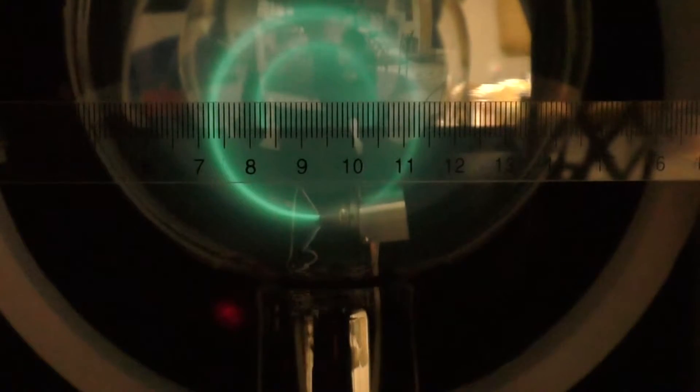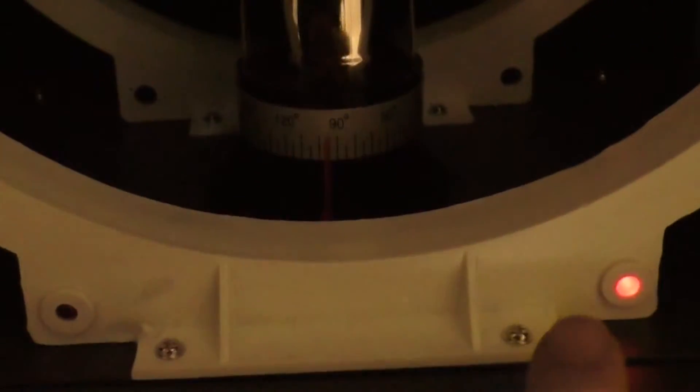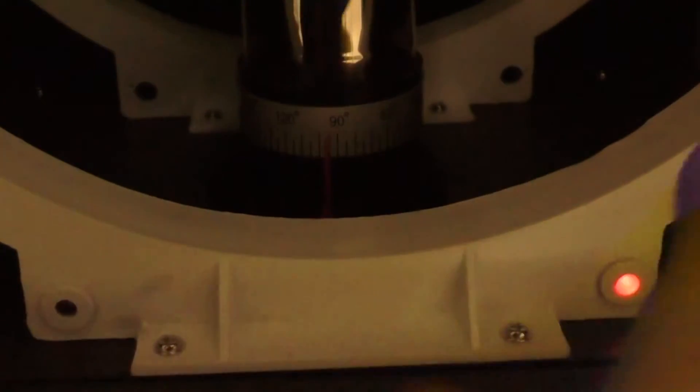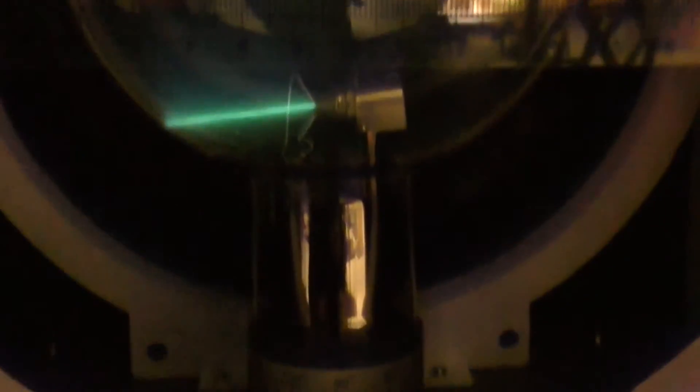I'm going to turn this down. I'm going to change the direction of the current in the Helmholtz coil. So now this LED is turned on, indicating it's going in the opposite direction. And now if I increase the magnetic field, it's going to curl down the opposite way.